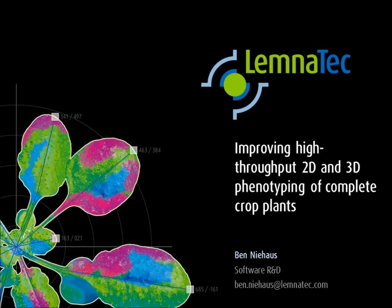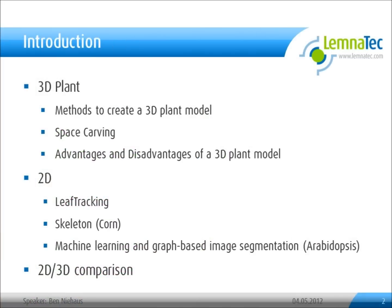Today I will talk about improving high-throughput phenotyping using 2D images and 3D models. First, I will show how to create a 3D plant using only 2D images. Then I will explain how to extract more information out of a single 2D image using state-of-the-art computer vision algorithms.